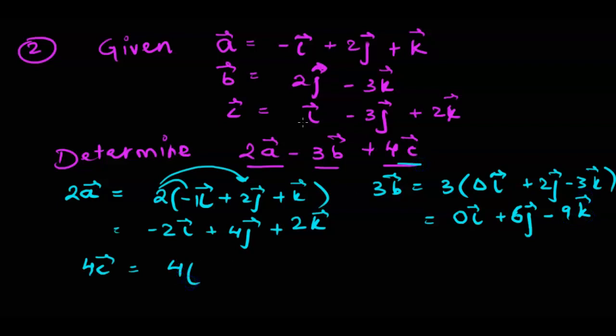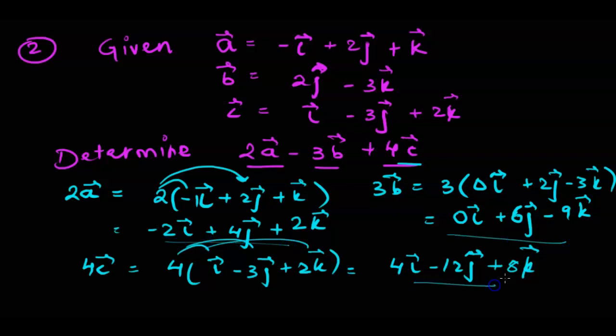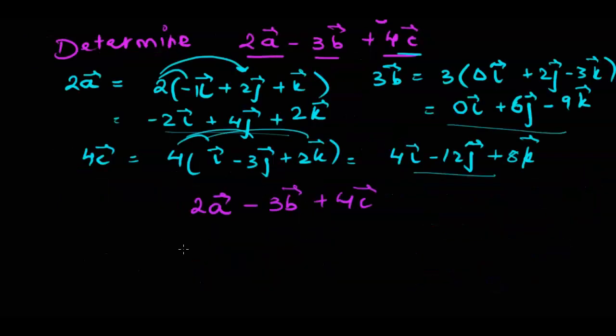Next we get is 4c. So 4c is 4 multiplied by vector c and that is i minus 3j plus 2k. When we multiply this we get 4i minus 12j plus 8k. So now all we have to do is just do 2a vector minus 3b vector plus 4c vector. So we would be subtracting this and this and this and we would be adding that to this.